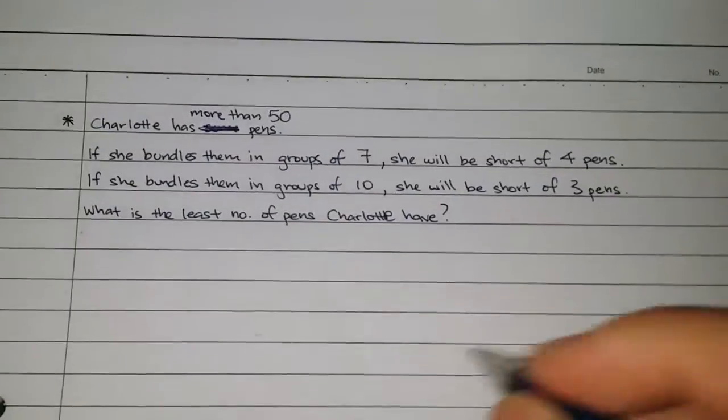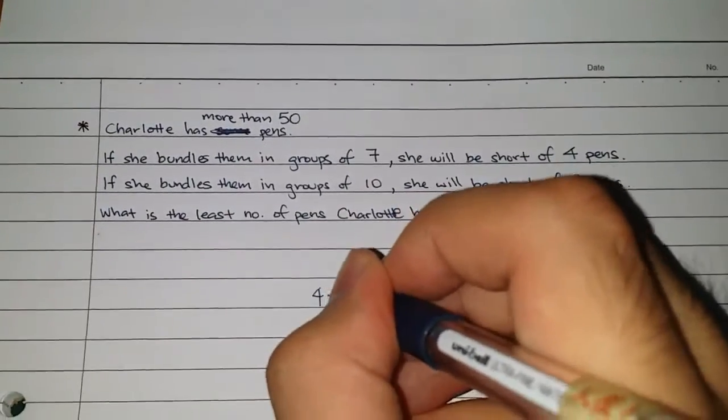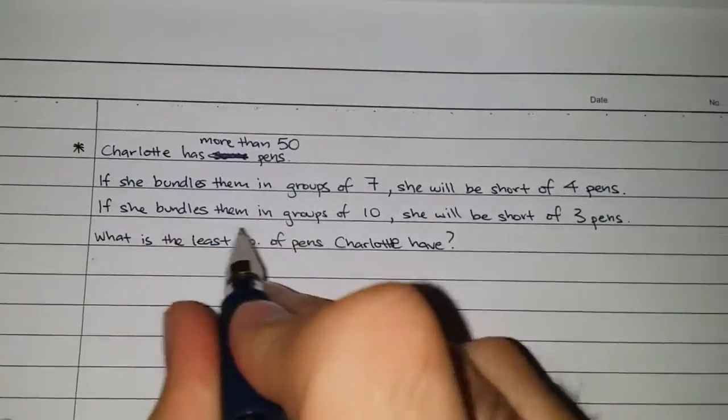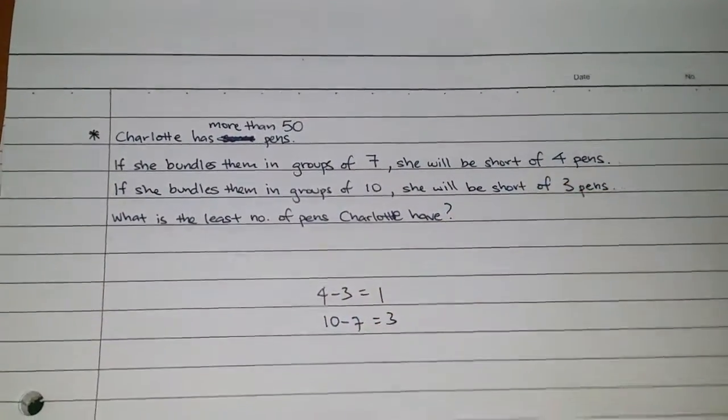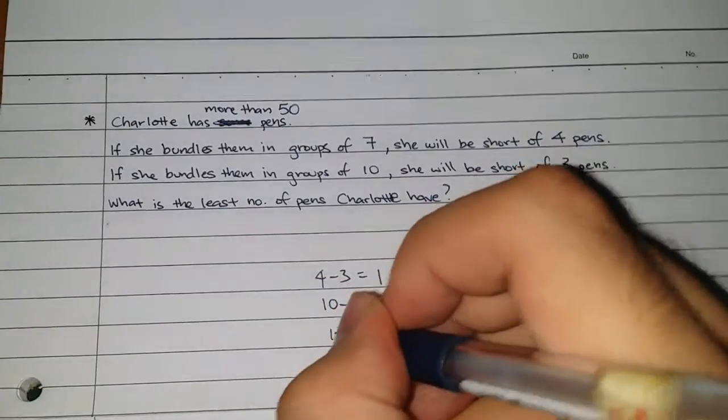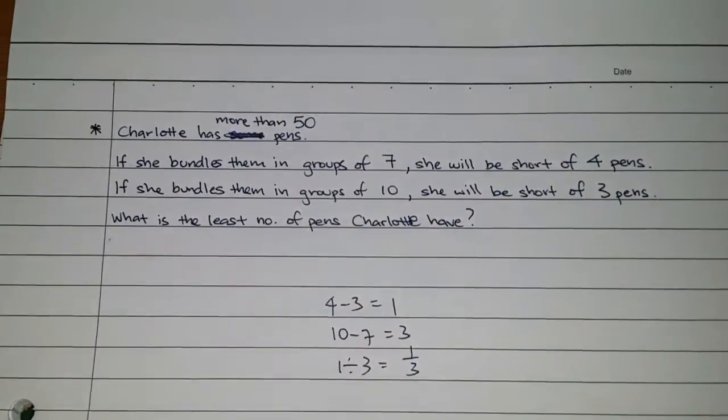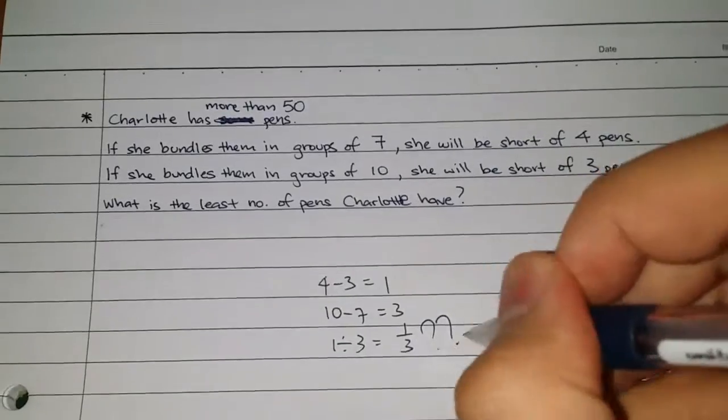So first, short shot, 4 minus 3, 1. Next, each each. So, each group is 10 minus 7, I get 3. Then, there's a problem now. 1 divided by 3, I get 1 third. 1 third group or 1 third pants or whatsoever. Why am I wrong?